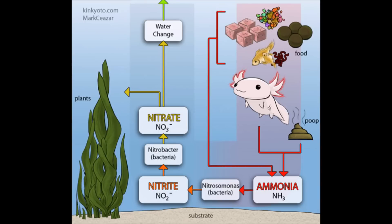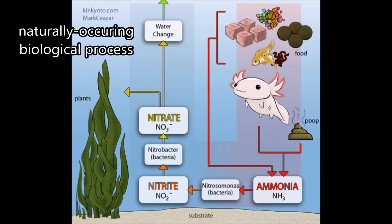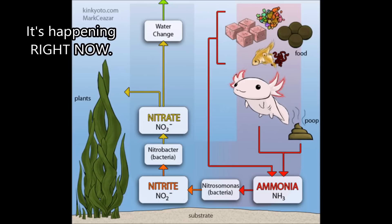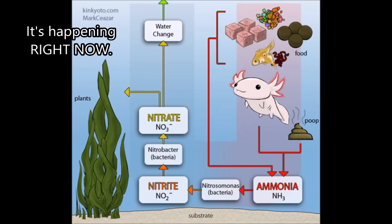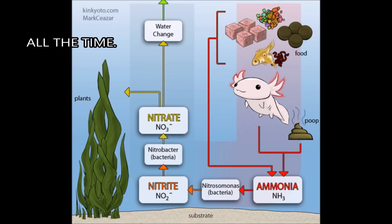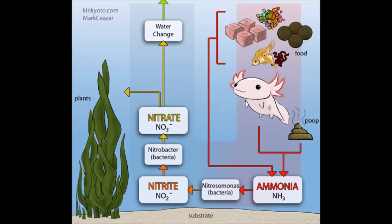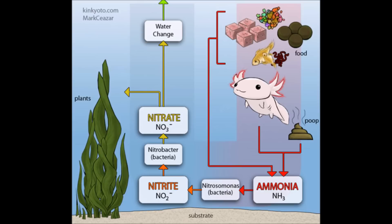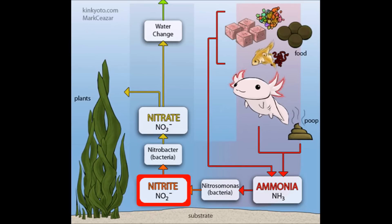The nitrogen cycle is a naturally occurring biological process. That means that it's going to happen whether you like it or not. And as the name implies, it deals with the conversion of the element nitrogen into different chemical compounds, mainly ammonia, nitrite, and nitrate.